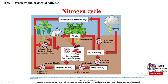Plants take up nitrates and are then consumed by animals. After the death and decomposition of plants and animals, nitrogenous compounds return to the soil, where aerobic and anaerobic bacteria and fungi decompose them into simpler compounds including ammonium. This ammonium is again converted by nitrifying bacteria into nitrates, completing the cycle. Denitrifying bacteria then convert nitrates back into atmospheric nitrogen, completing the nitrogen cycle.